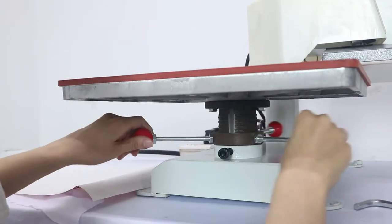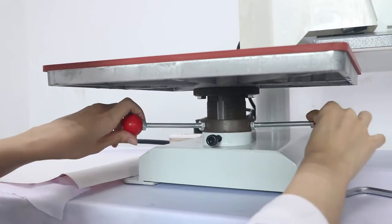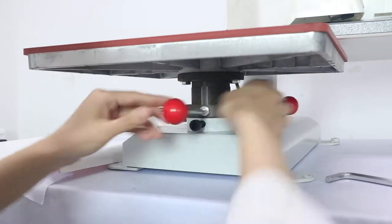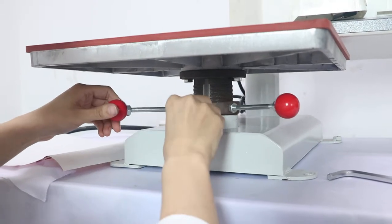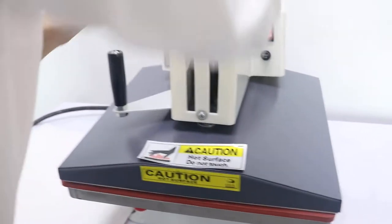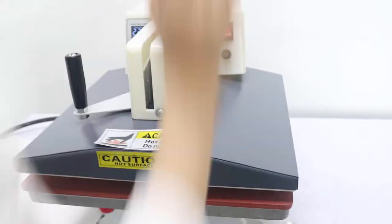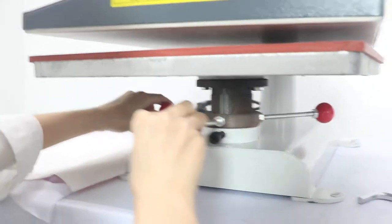If we turn anti-clockwise, the pressure will be increased. The bottom plate lifts up. And if we want to try the pressure, just press this button. If we feel the hand a little harder to push it down, then the pressure will be okay. The pressure is not enough.